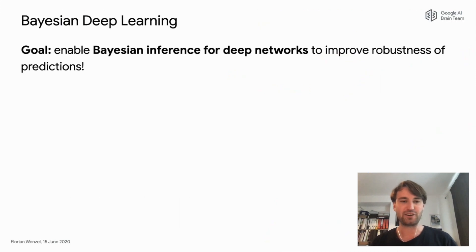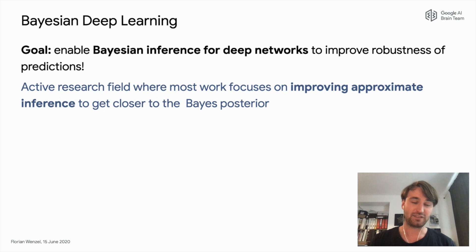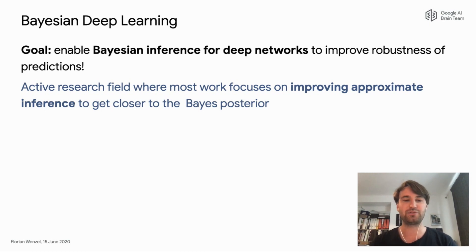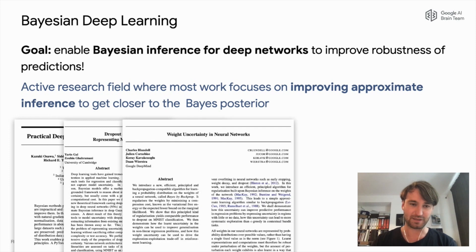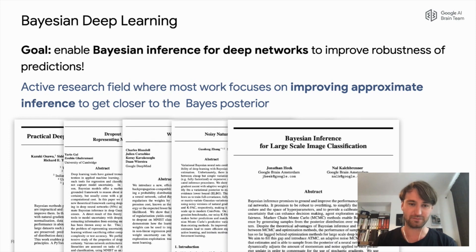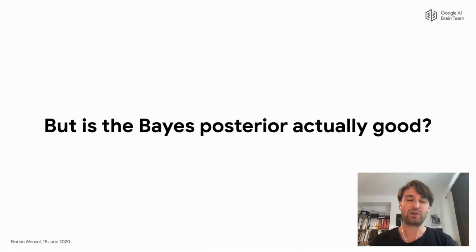Today I want to talk about Bayesian deep learning. The goal is to enable Bayesian inference for deep networks to improve robustness of predictions. It's a very active research field where most work focuses on improving approximate inference techniques to get closer to the Bayes posterior. Today I want to ask a different question: is the Bayes posterior actually good?